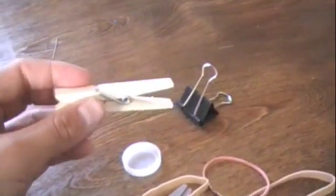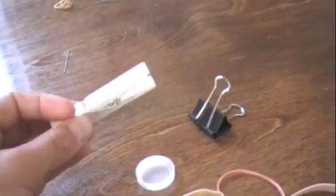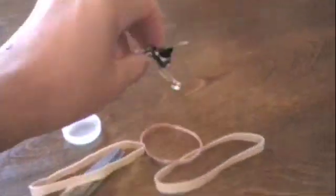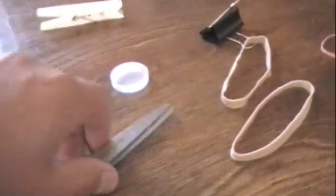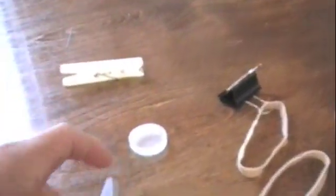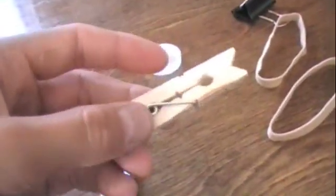So first of all what you're going to need is a plastic bottle cap, clothespin, binder clip, rubber bands, and some scissors. So start off by disassembling your clothespin.